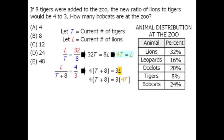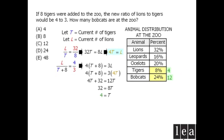Let's solve for T. Expanding both sides and subtracting 4T from both sides, then dividing both sides by 8, we get T equals 4. So we currently have 4 tigers at the zoo. Now we want to find how many bobcats there are. Our table tells us there are three times as many bobcats as tigers, so if there are 4 tigers, there must be 12 bobcats — meaning our answer must be C.